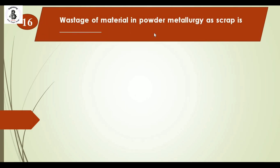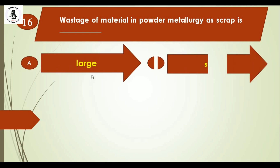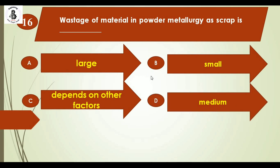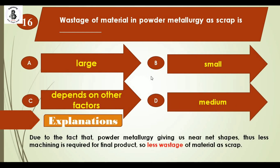Question 16: Waste of materials in powder metallurgy as scrap is — Option A: large, Option B: small, Option C: depends on factors, Option D: medium. In powder metallurgy, essentially zero scrap is achieved. Very little scrap is produced in the process. The right answer is option B: small.